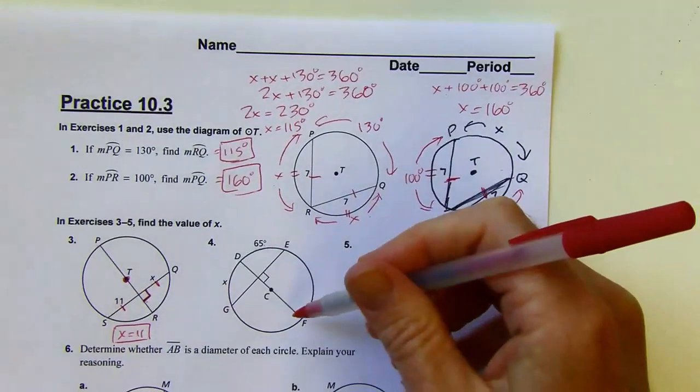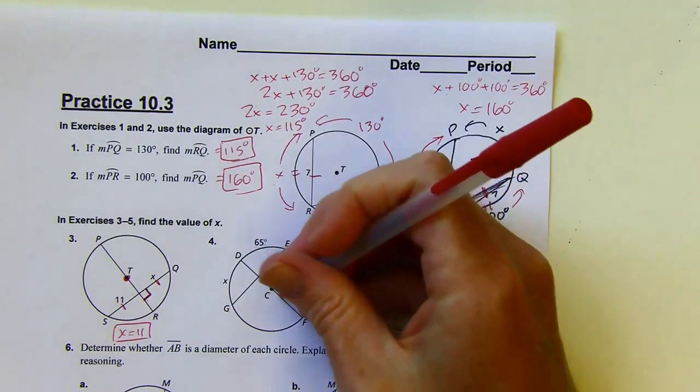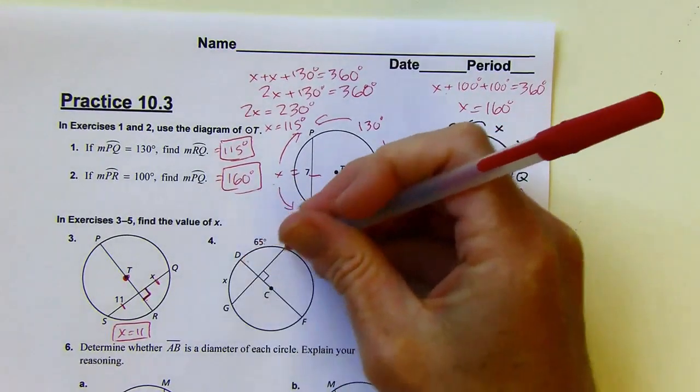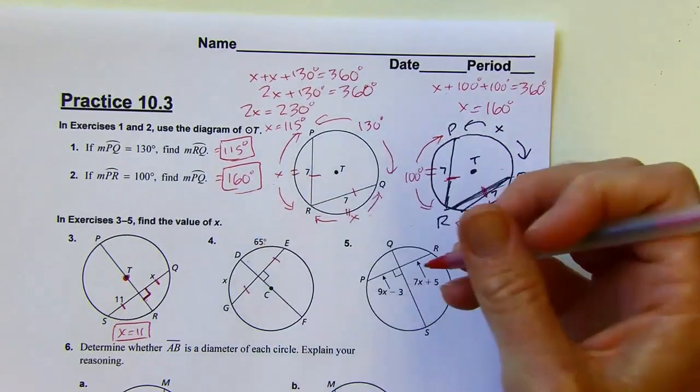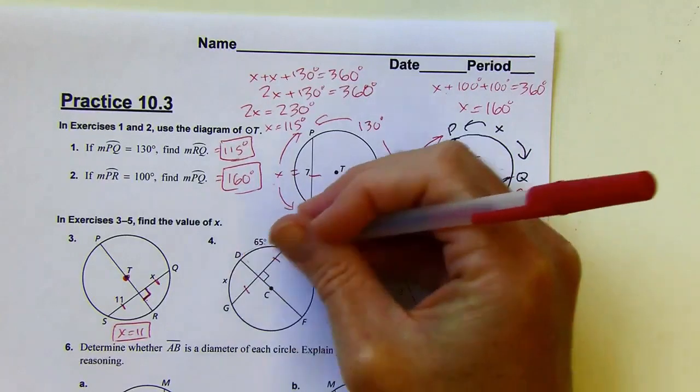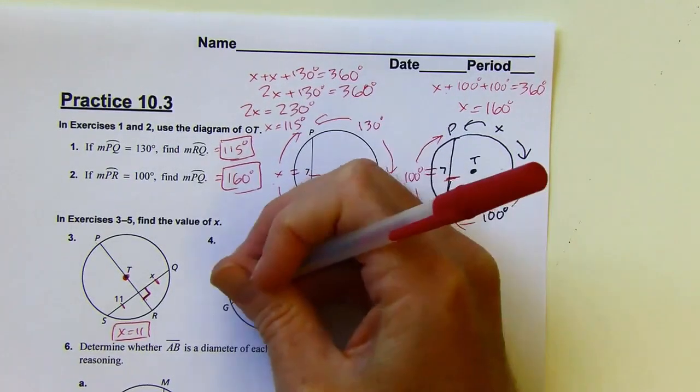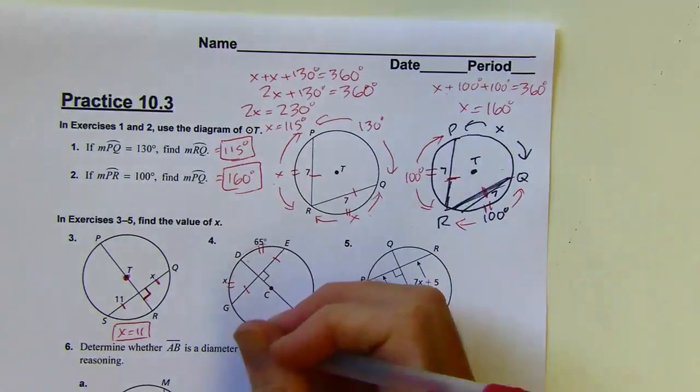This is the same kind of deal here. So this diameter is perpendicular to this, so it will bisect that chord, but it will also bisect the arc. So that means X is going to be 65 degrees here.